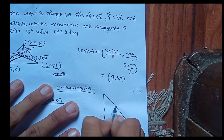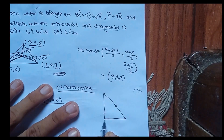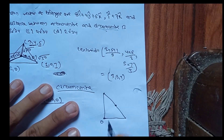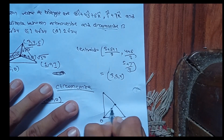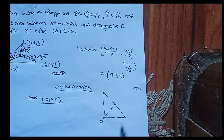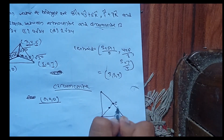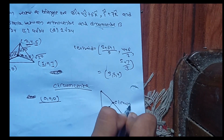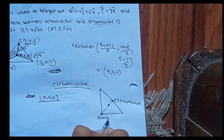For the orthocentre and circumcentre, we use the property that they are related by the Euler line. The centroid divides the segment joining orthocentre and circumcentre in the ratio 2:1.